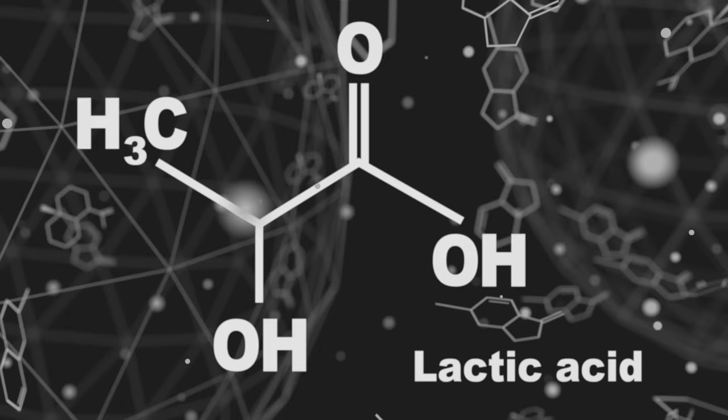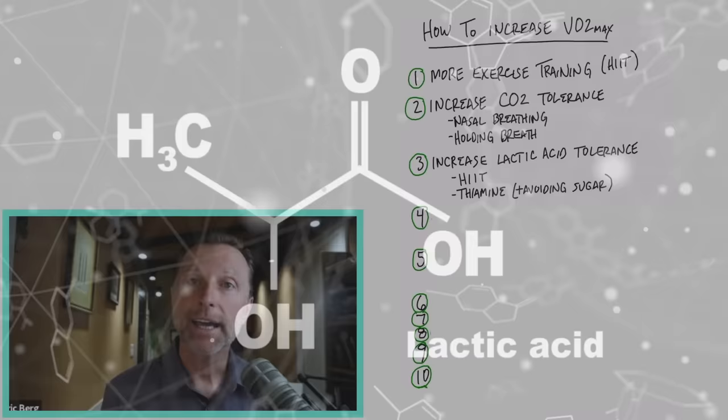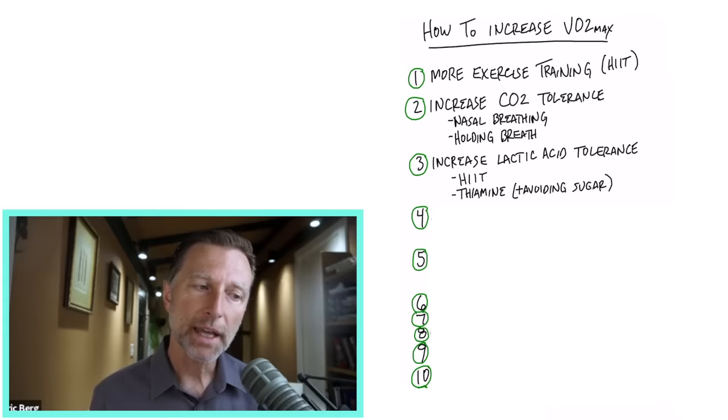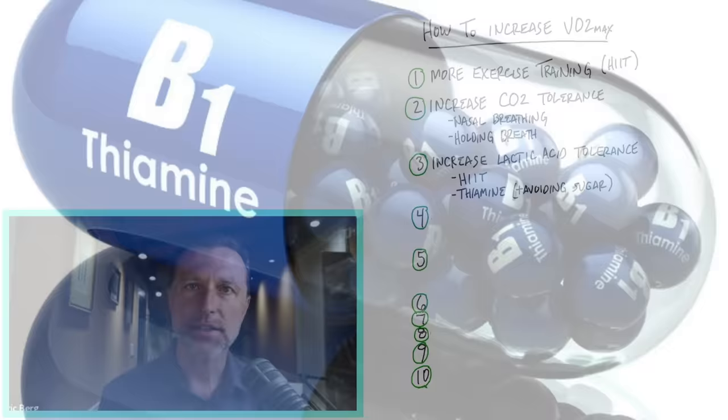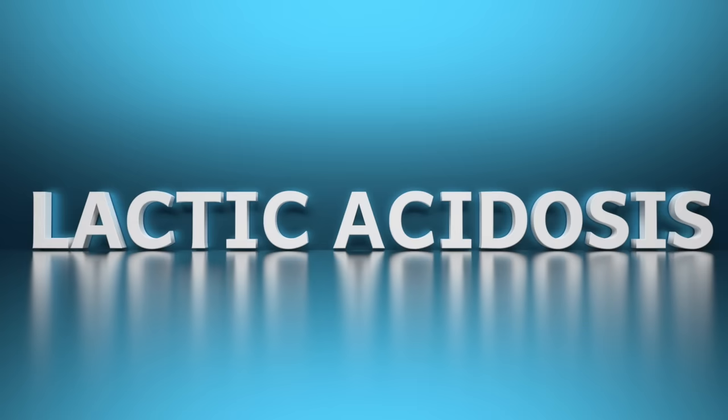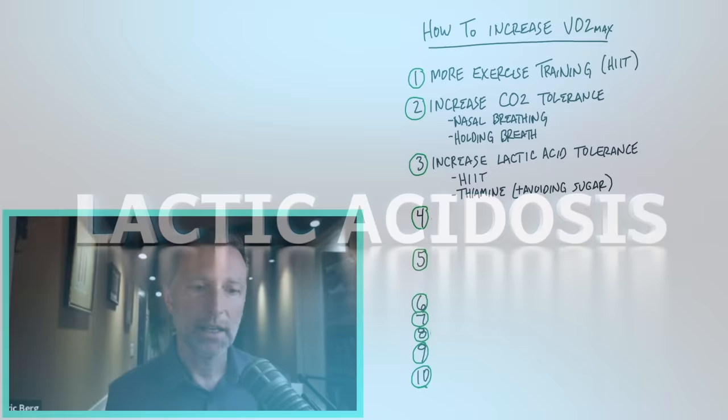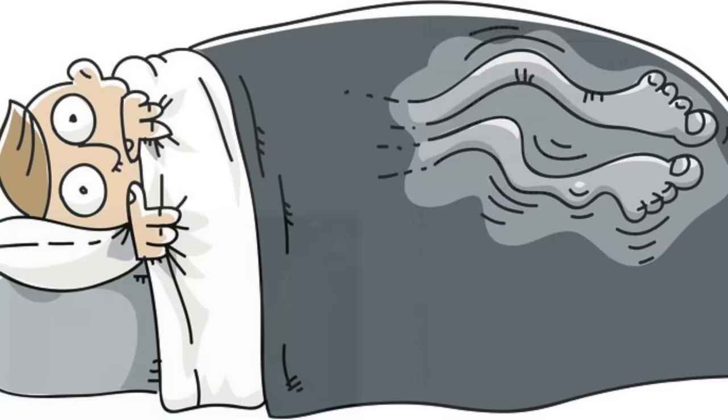Number three, increasing your lactic acid tolerance. Just by exercising high intensity interval training, you can increase the clearance and tolerance of lactic acid. But there's also something else, and that is taking or making sure you have enough B1, thiamine. Thiamine helps get rid of lactic acid. This is why when someone is deficient in B1, they can develop lactic acidosis or their body tends to hold lactic acid. And I had that problem when I was consuming so much refined carbs. I started getting restless leg syndrome. I couldn't sleep at night. And that would be a perfect example of filling up too much lactic acid in the muscle.